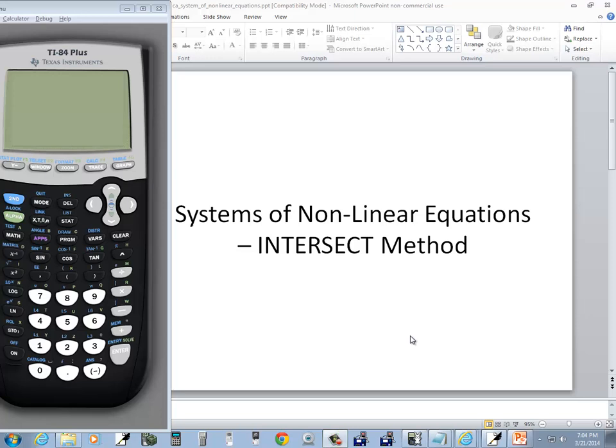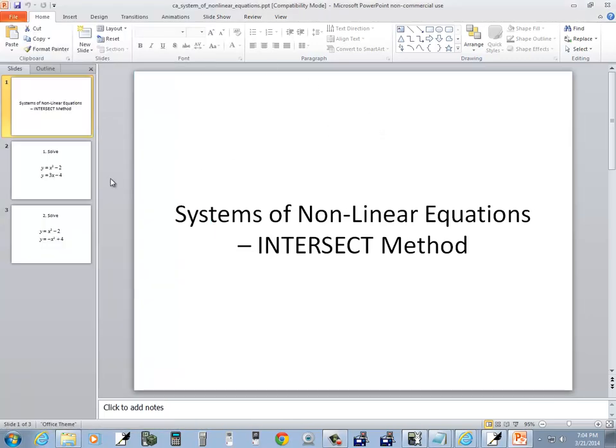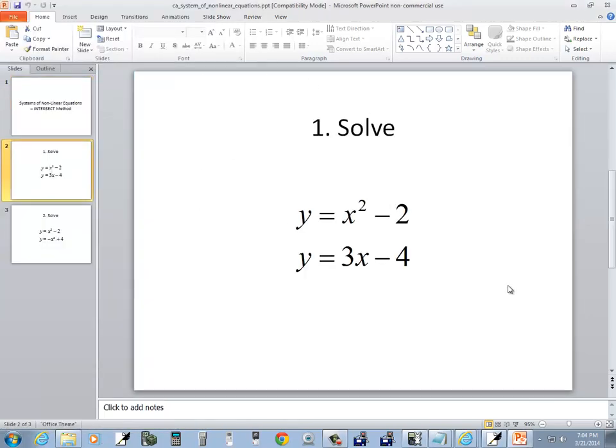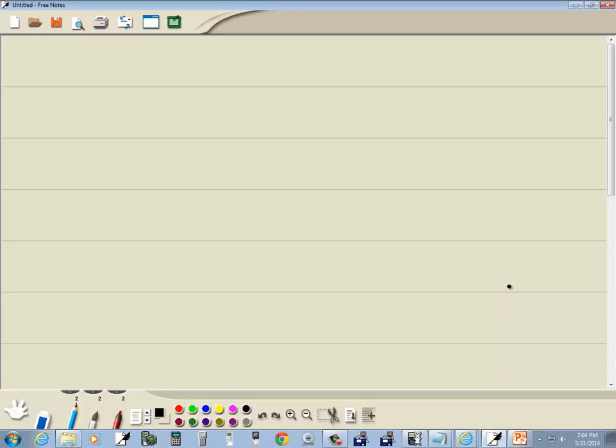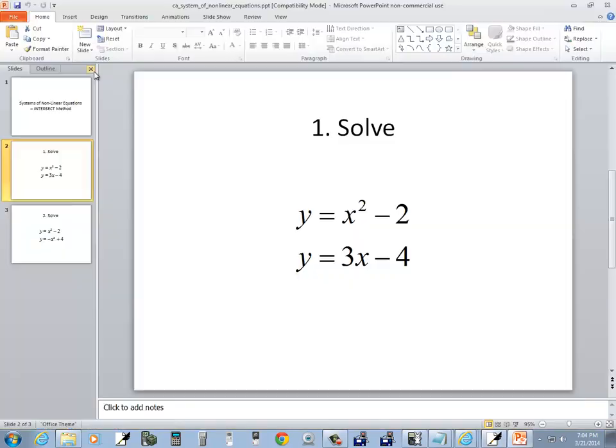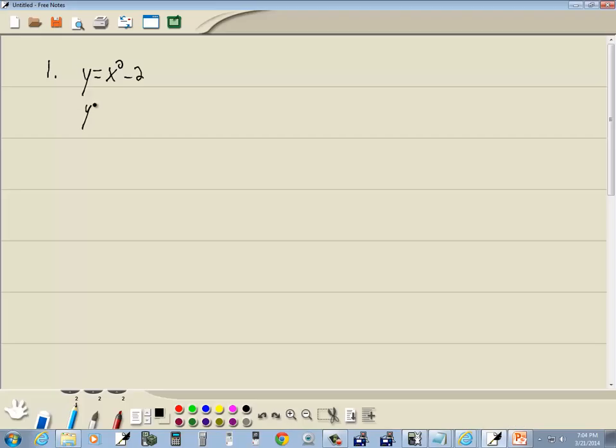This is on solving systems of non-linear equations using the intersect method on the TI-84 Plus calculator. So let's take a look at our first problem. We've got y equals x squared minus 2 and y equals 3x minus 4.